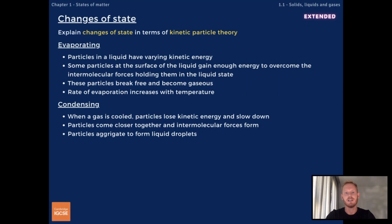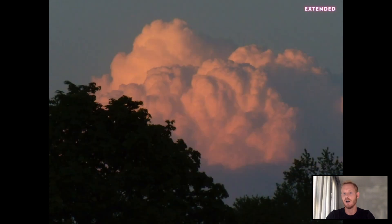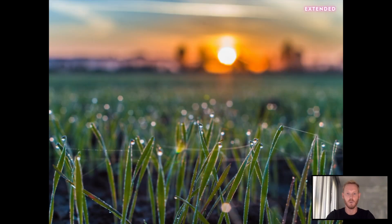The final change of state is condensing — a change from a gas to a liquid. When a gas loses heat, its particles lose kinetic energy and come closer together. When they lose enough energy, forces of attraction form between them and the substance turns into a liquid. This is why water vapor forms droplets on a cold window, why clouds form at high altitudes where temperatures are much lower, and why dew appears on a cold morning.